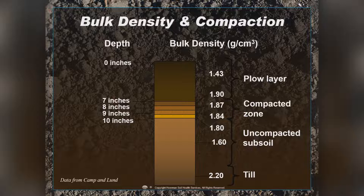You can see in this graph that once we get through that compacted layer, the bulk density starts to decrease, and then eventually increases again. In an undisturbed soil, the bulk density should gradually increase as you go deeper.